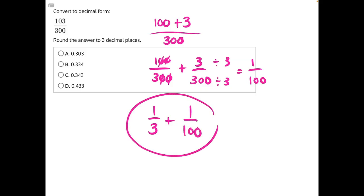Both of these are common fractions that we likely have memorized so that we can easily convert them into decimal form. 1 over 3 would be 0.333 repeating, and then 1 one-hundredth would be 0.01.